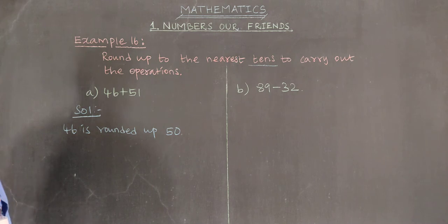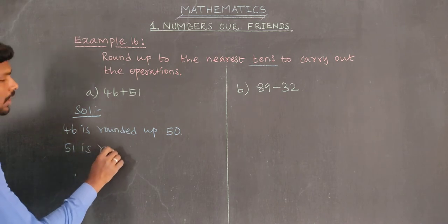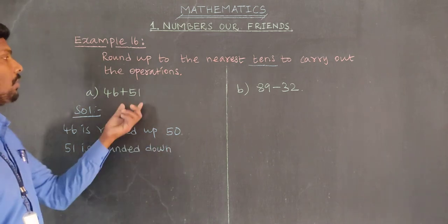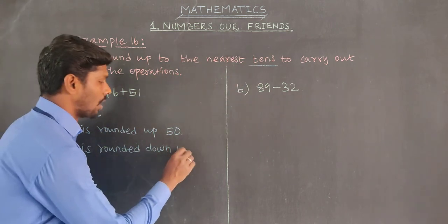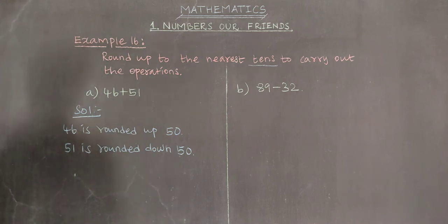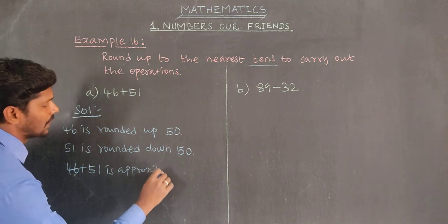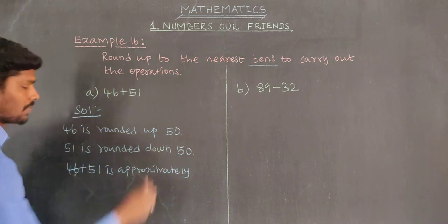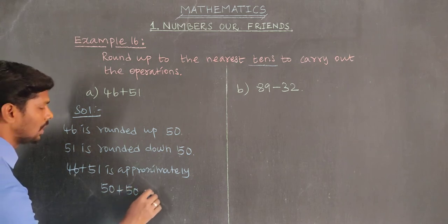Next, 51 rounds down to 50. Part A: 50 plus 50 approximately equals 100.